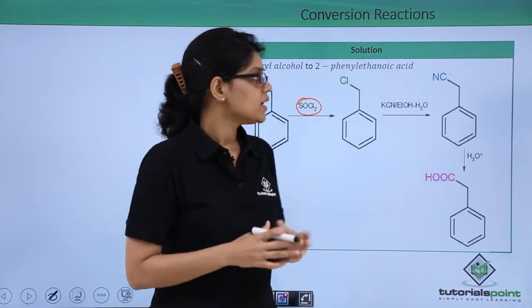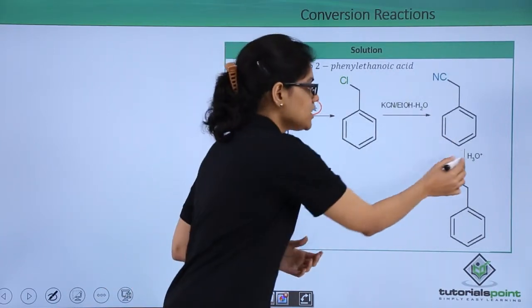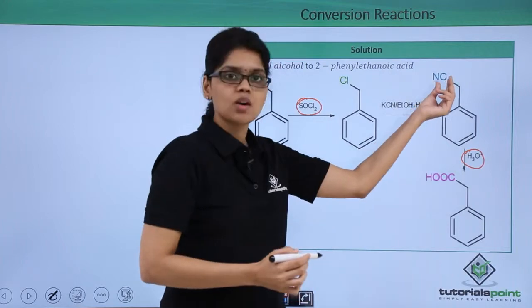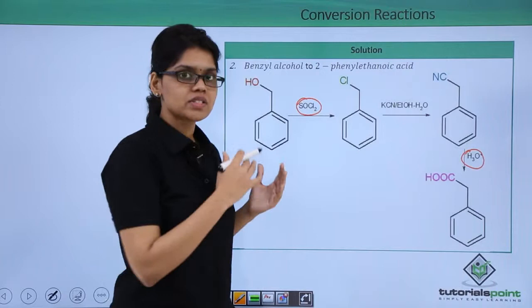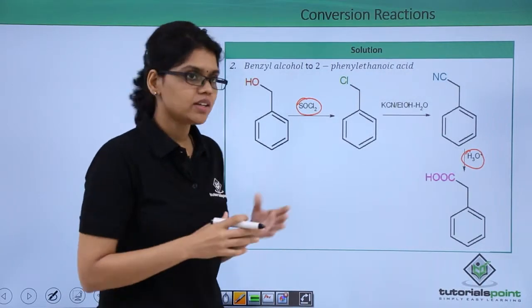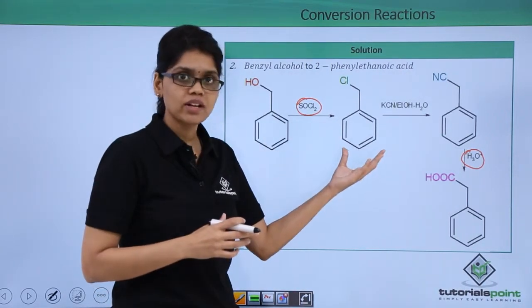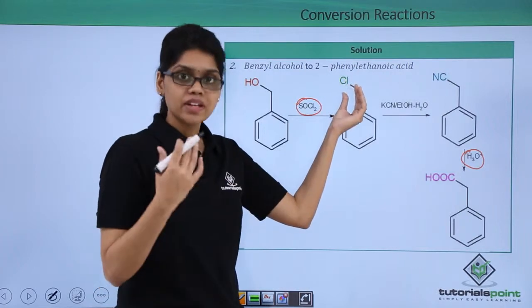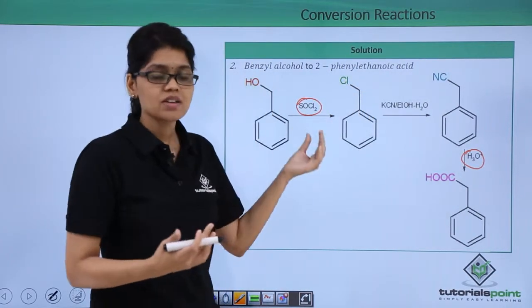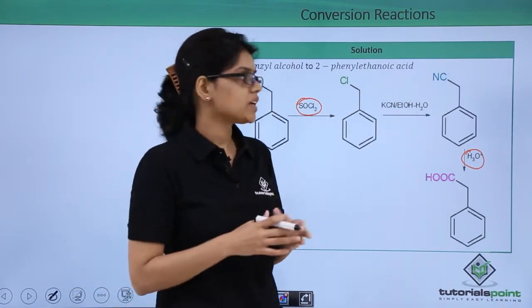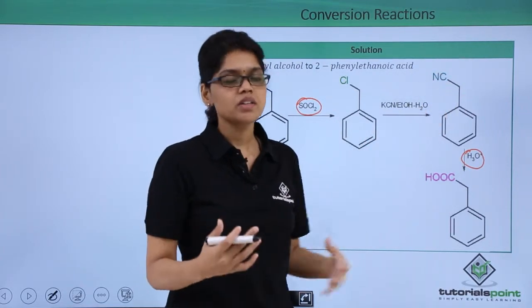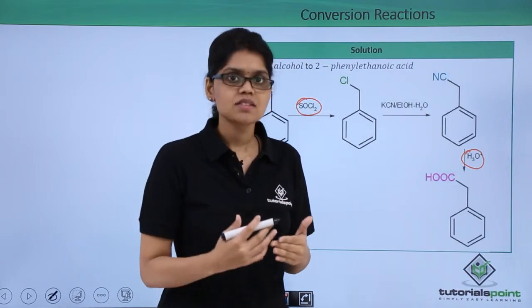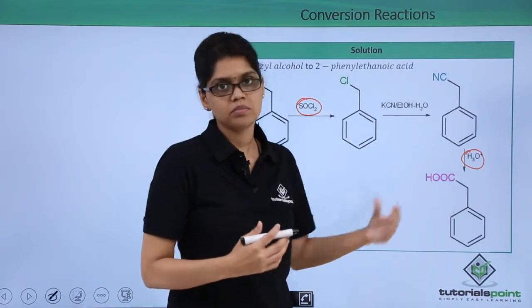Now all you need to do is simply hydrolyze this benzyl cyanide so that the CN gets converted to COOH giving us the final product. I hope you are clear on how we have achieved this conversion. We are converting benzyl alcohol to benzyl chloride so that chlorine can be a very good leaving group, and then perform substitution using alcoholic KCN where we introduce CN. Then simply hydrolyze the CN to obtain COOH in that place.